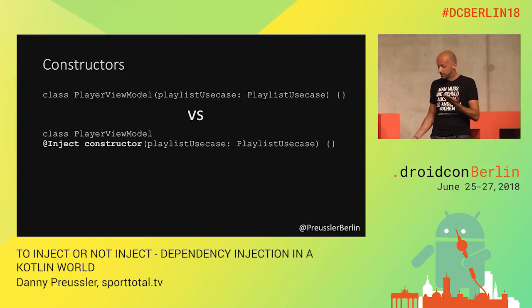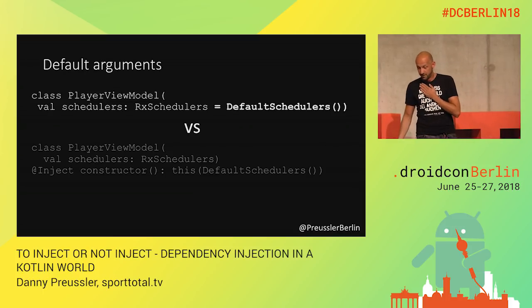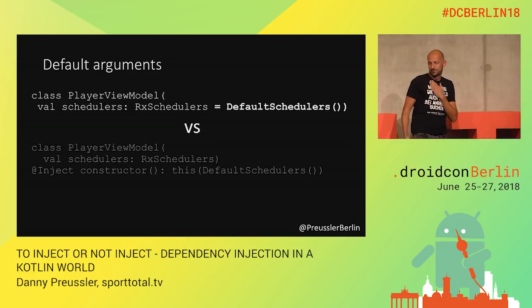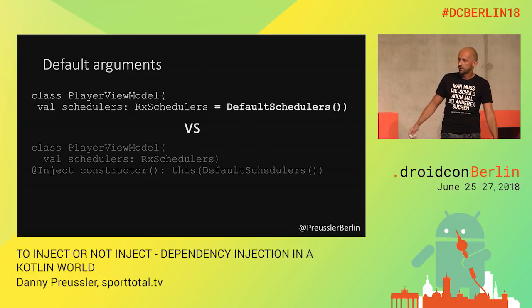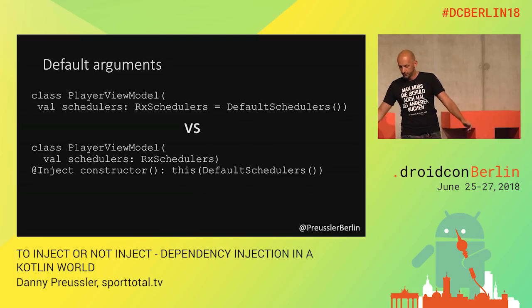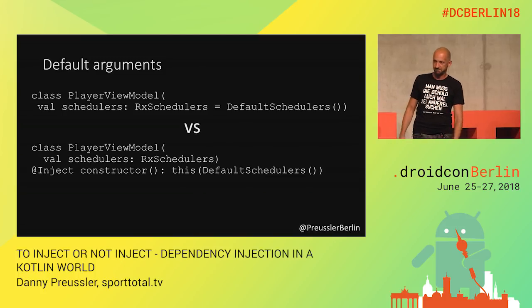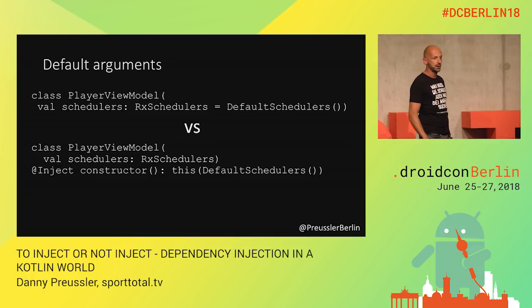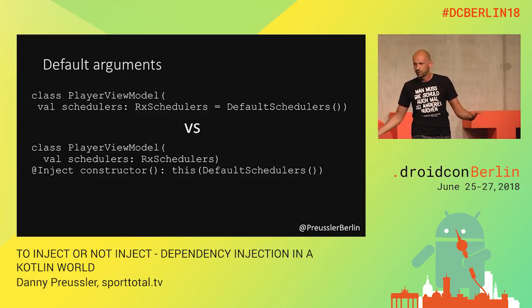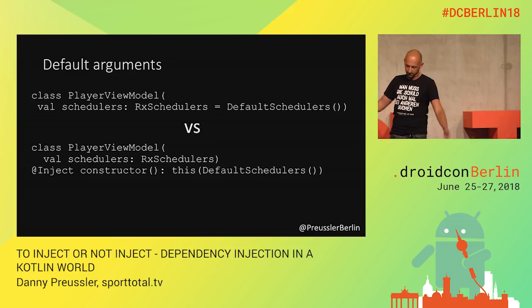Kotlin is so concise — that's what I like about it. And there's more: default arguments, such a nice thing. If you don't pass it, it will use a default. When injected — not possible. It's generated Java code; it doesn't see your default arguments. So you have to have a second constructor, which is not idiomatic in Kotlin. Makes it ugly again.